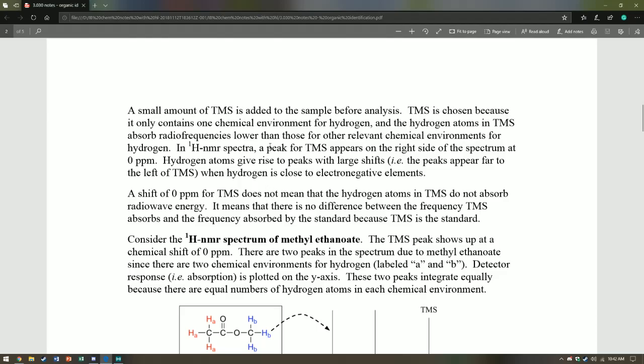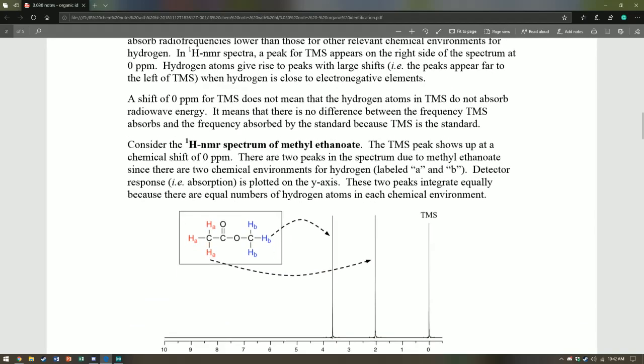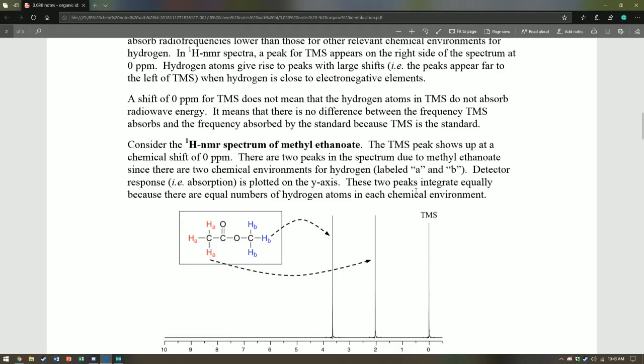In an HNMR spectrum, a peak for TMS appears on the right side of the spectrum at zero, so this is what we call zero shift. It means there's no difference between the frequency that absorbs and the frequency absorbed by the standard. Basically, since we know where the TMS peak is, we can measure everything relative to it relatively easily.